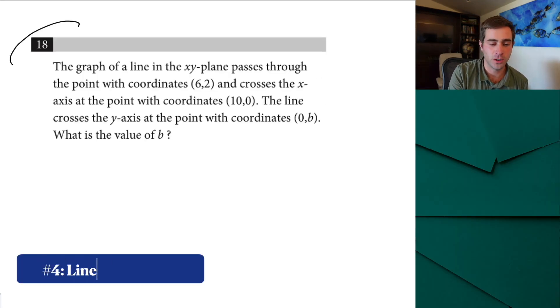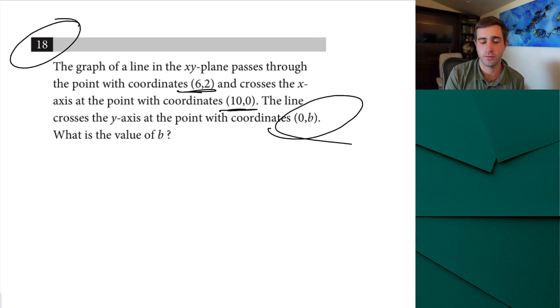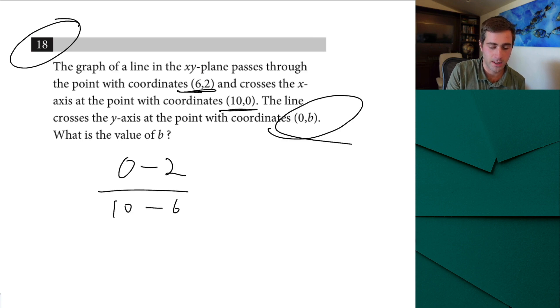All right up at number four is good old line questions. These have been showing up on the SAT for the past seven years so it's something that they love to reuse over and over. Now here we're told that the line passes through these two points and we're told the line crosses the y-axis at the point with the coordinate 0 comma b. How do we solve for b? This is really all about taking two points and finding the full equation of a line. There's really easy steps we can do.